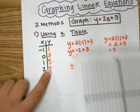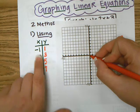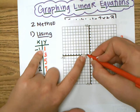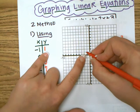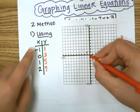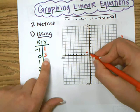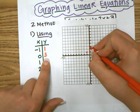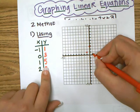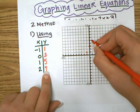Once we have completed our table, we are ready to plot these points. Starting at the origin, we're going to go to the left one and then up one. And we're going to go back to the origin — we're going to stay there because it's zero for the x — and then go up three.